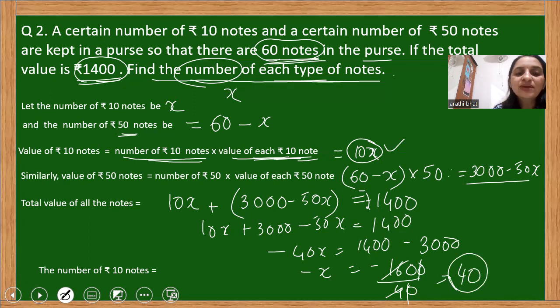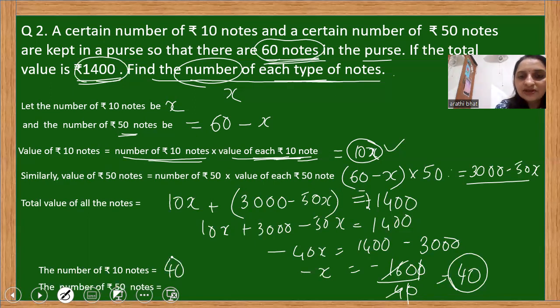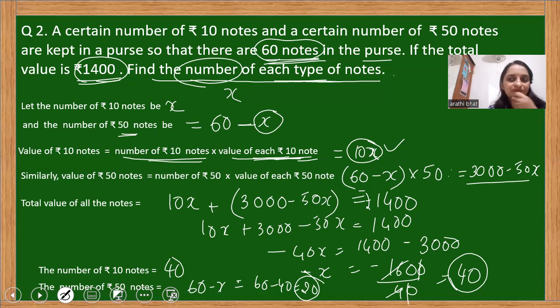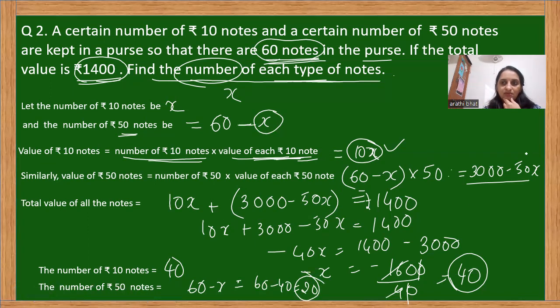We kept x as the number of rupees 10 notes, so the number of rupees 10 notes is 40. The number of rupees 50 notes will be 60 minus x, that is 60 minus 40, which is 20. So there are 40 rupees 10 notes and 20 rupees 50 notes in the purse. Is that clear? Any doubts, you can ask me. Thank you.